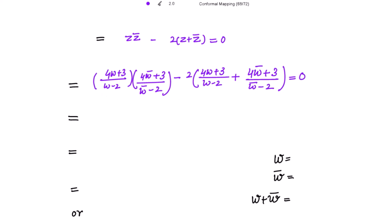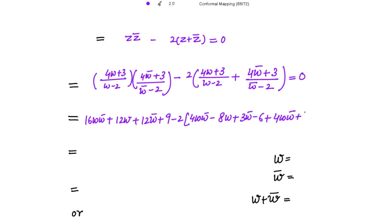Taking the common denominator as (w - 2)(w̄ - 2) and solving the numerator, we expand: 16ww̄ + 12w + 12w̄ + 9 minus twice the expansion, which gives terms 4ww̄ - 8w + 3w̄ - 6 + 3w̄ - 6 + 4w̄ + 3w - 8w̄ + 6. The denominator moves to the other side giving 0.